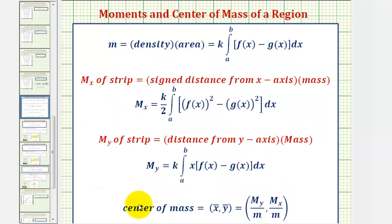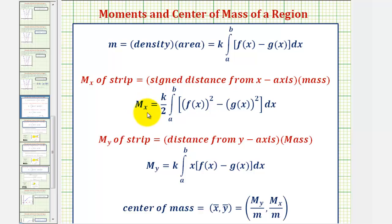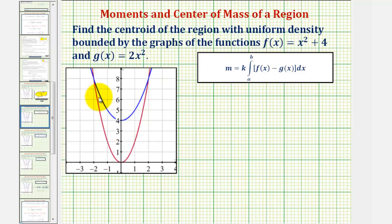In order to find the centroid or center of mass, we'll begin by determining the total mass, which is equal to density times area. Because we have uniform density, we'll use the constant k for density. This integral gives us the area between two functions. Then we'll find the moment about the x-axis and the moment about the y-axis. Once we have this information, the centroid is given by the point (My/m, Mx/m).